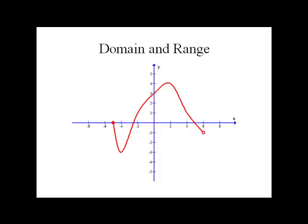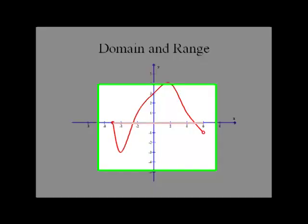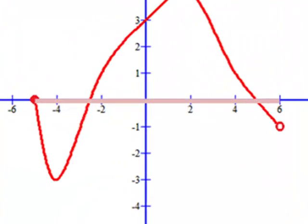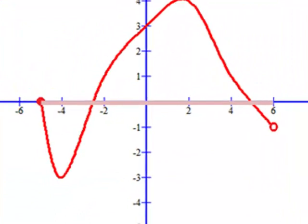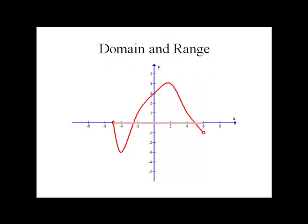Now we need a way of notating this. So let's start with domain. We've seen that we want to look across the x-axis, and our domain goes from negative five to six. It includes negative five because of the closed circle, but does not include six because of the open circle. Writing that in interval notation gives us negative five to six, with a bracket on the negative five and a parenthesis on the six.